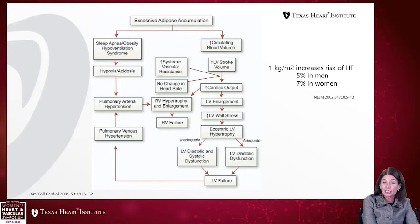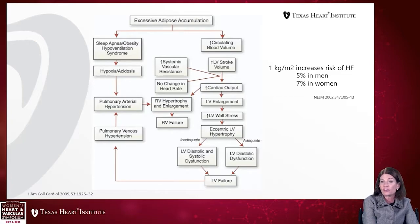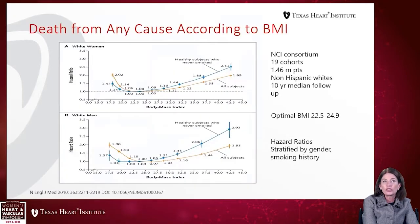When adequately compensated, this leads to only diastolic LV dysfunction, but when inadequate, it leads to systolic as well as diastolic heart failure. It's important to note that for every one-point increase in BMI, it raises the risk of heart failure by 5% in men and 7% in women.